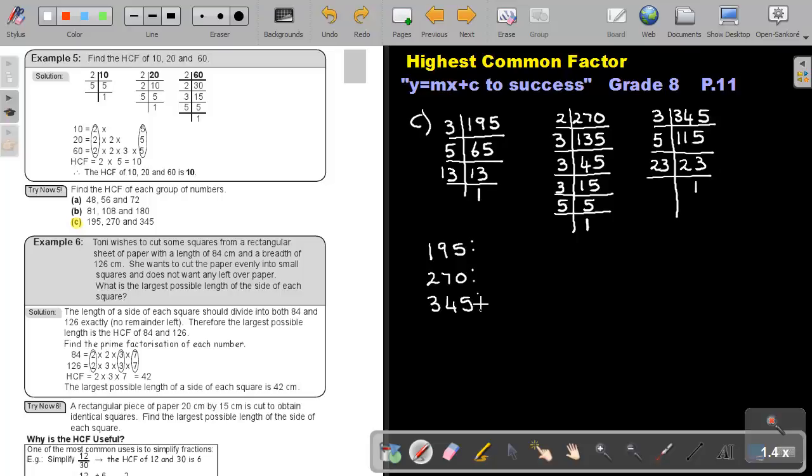Now, the best will be to write down the one with the most factors. That will be 270. So, it's 2 times 3, times 3, times 3, times 5. Then I can fill in the rest. So, there's a 3. So, it will be 3 times 5, times 13. And I can fill in the last one. It's a 3 times 5, times 23.